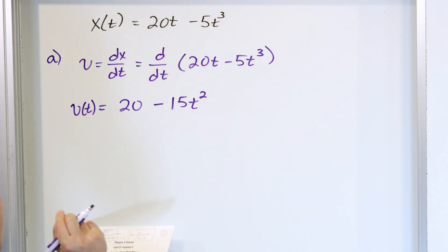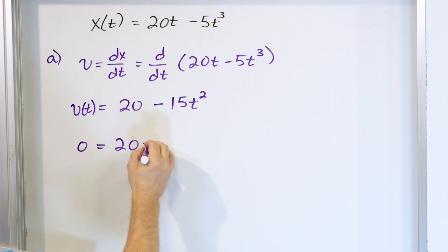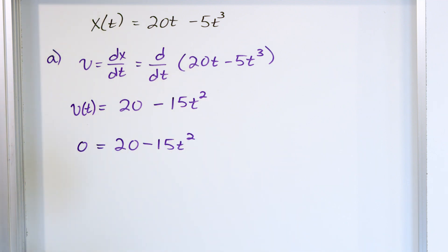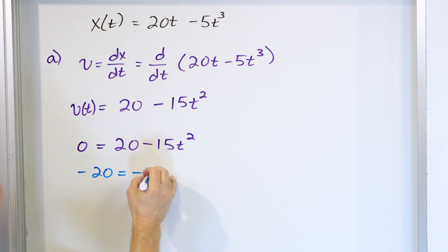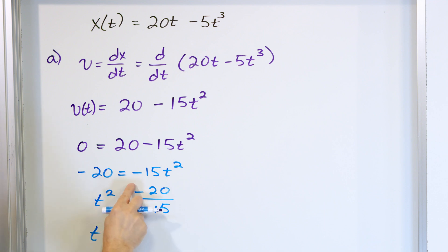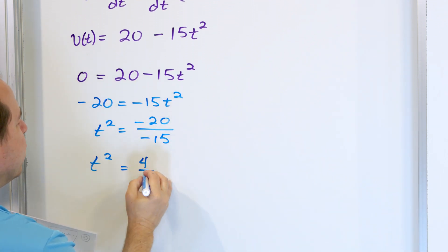We're asked when the velocity is zero, so we set v = 0: 0 = 20 - 15t². Rearranging gives -20 = -15t², so t² = 20/15. The negatives cancel, and simplifying by dividing by 5 gives t² = 4/3.